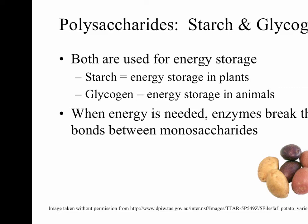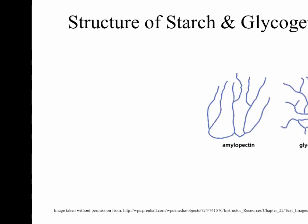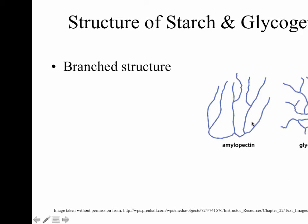Remember we talked about structure and function — this is where we're going to see some of that come into play. Looking at this picture, amylopectin is a type of starch on the left, and glycogen is on the right. What you hopefully see in common with these two pictures is the branching. Both starch and glycogen have a branch structure, and each of those individual dots making up these branches is a monosaccharide. So the monosaccharides are strung together in a branch structure.